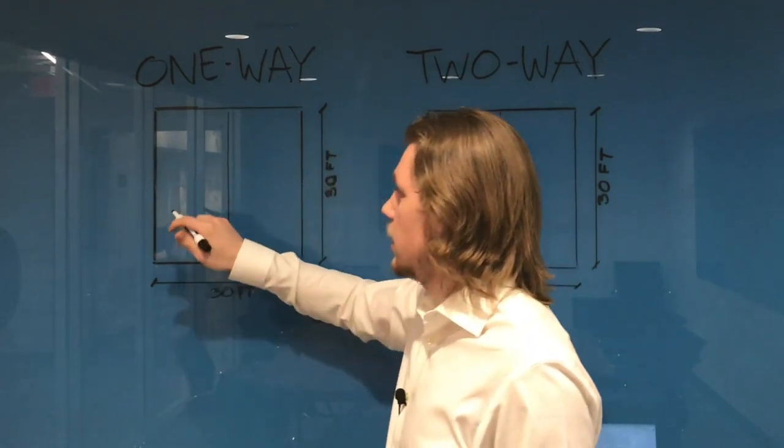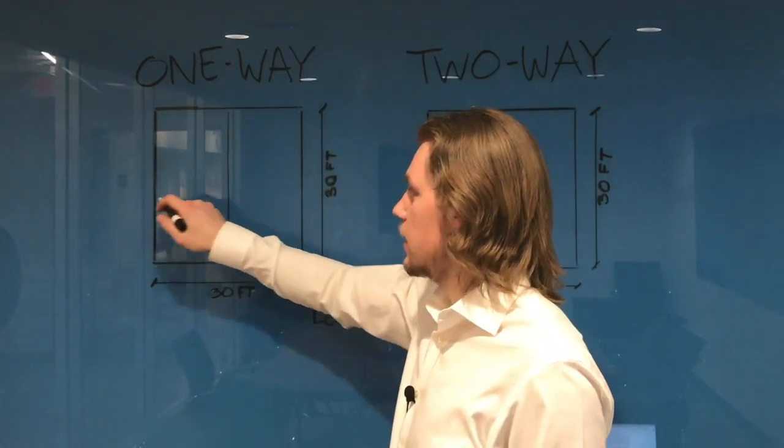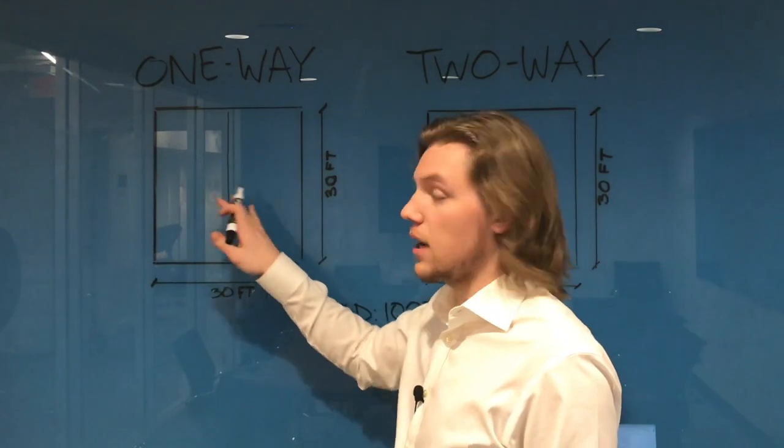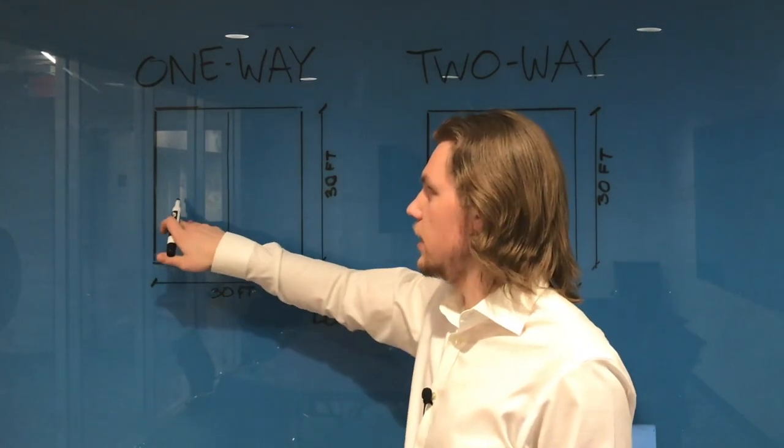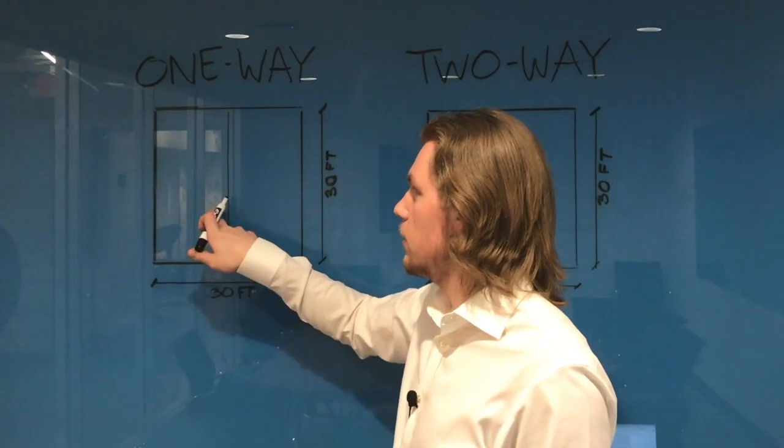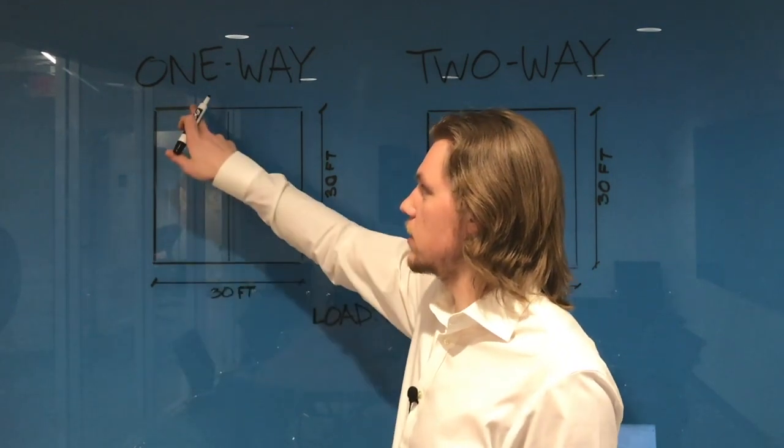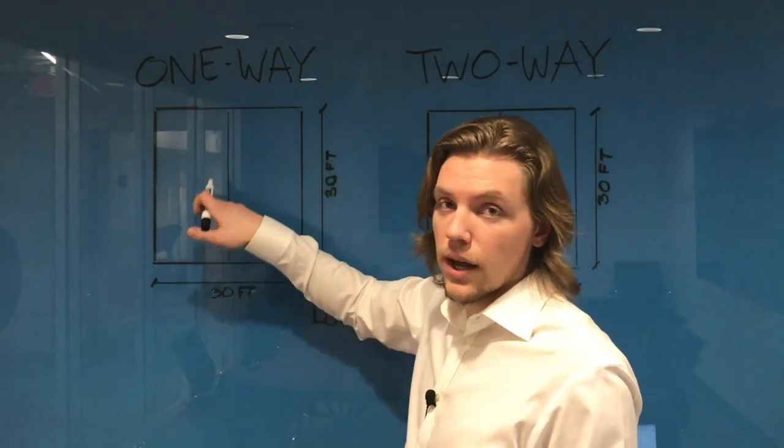You're going to see the slab spanning this way because in this direction, even though our spacing is not very realistic here, this span is only 15 feet between this beam and this beam versus if we wanted to put the slab going this direction, it would have to span 30 feet.